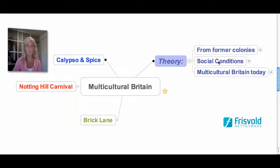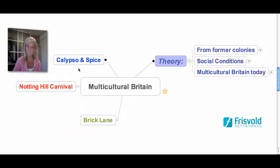We will study the social conditions in Britain and how multicultural Britain functions today. We will look at some cultural aspects: calypso and spice, the carnival called Notting Hill Carnival, and a street which is called Brick Lane.